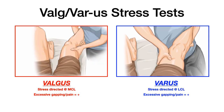The valgus and varus stress tests are easy to remember because the names tell you what's happening. In the valgus stress test, you apply valgus stress directed medially toward the MCL. In the varus stress test, you direct varus stress laterally toward the LCL. Excessive gapping — the joint space opening up — or pain at the MCL or LCL is a positive test indicating pathology. The knee has many structures that can be damaged: meniscus, LCL, MCL, ACL, PCL — hence the many tests.